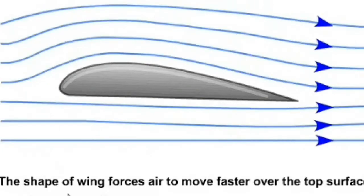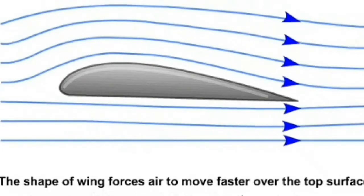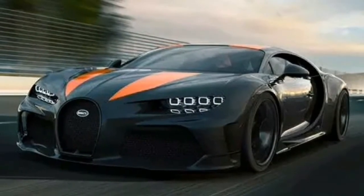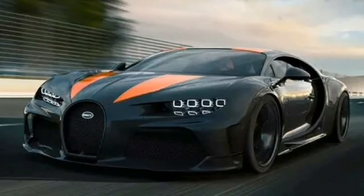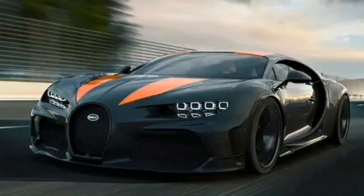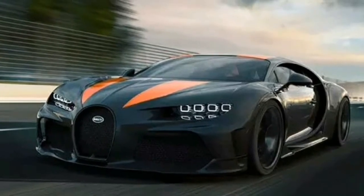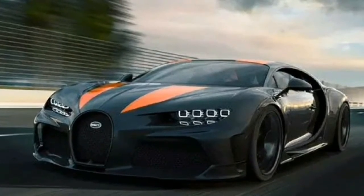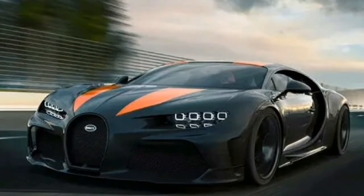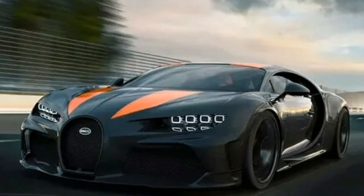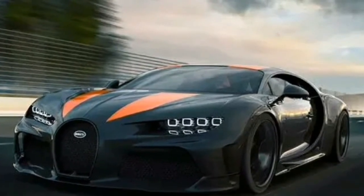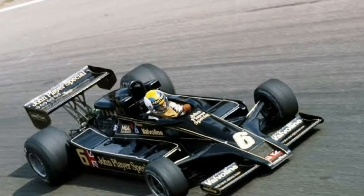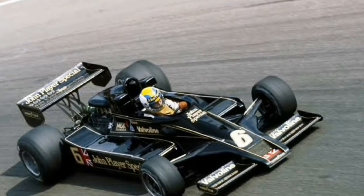The higher pressure underneath leads to a lift force acting from bottom to top — this is how aeroplanes and aircraft fly. But what we need for a race car is negative lift, which is also called downforce. For that, we have to increase the pressure on top of the wing and reduce it underneath, so we are reducing the flow of air underneath the wing.